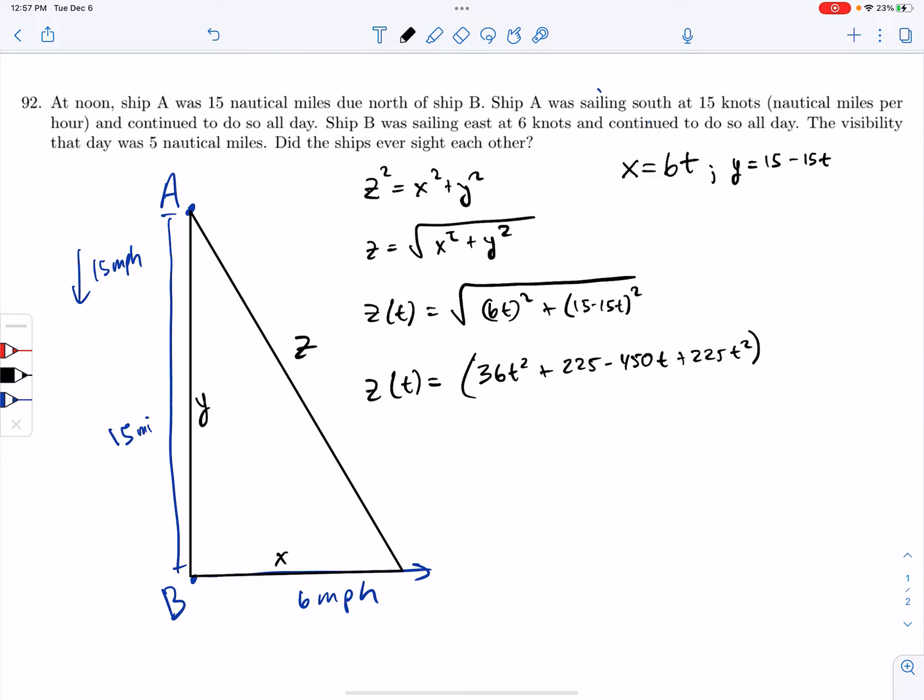And all of that's getting raised to the one half. The inside part, I can combine the 36T and the 225. Doing so, I think 261T squared minus 450T plus 225 raised to the negative one half power. And then times, I need to use a chain rule. So times the derivative of the inside part. So that's going to be 522T minus 450.